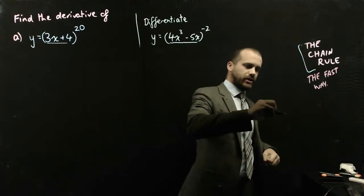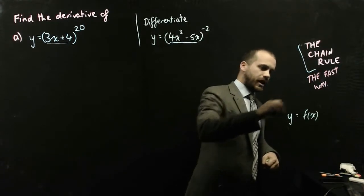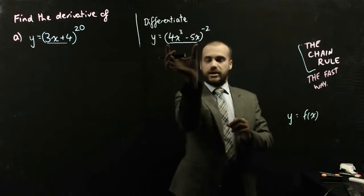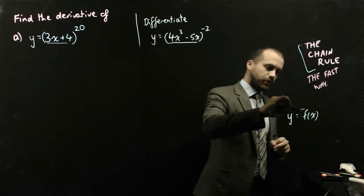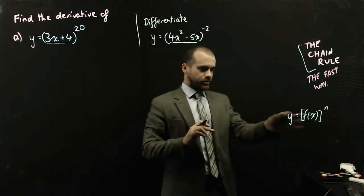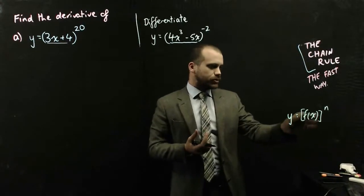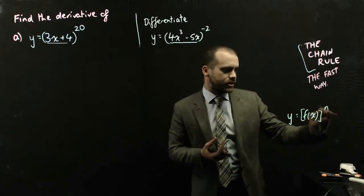So the rule is going to be something like this. If y equals f of x, a function, so there's a function, raised to a power. So if you're seeing that y is my thing, that's going to be equal to f of x raised to a power.